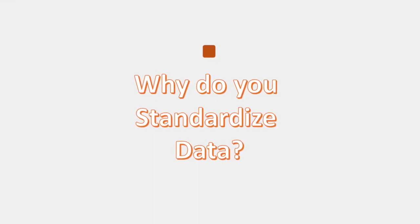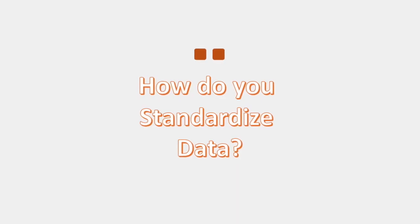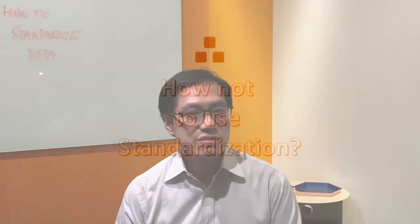To summarize, I have addressed three questions in this video. Why do you standardize data? It's when you want to make different data series comparable to each other. How do you standardize data? Compute the average value and the standard deviation of the entire data set, then run through your data one item at a time — subtract the average from each value and divide by the standard deviation. How not to use standardization: standardizing your data does not turn your data into a normal distribution, so if you would like your data to look more like a bell curve, you need to look elsewhere.